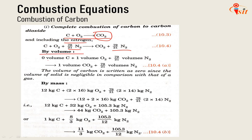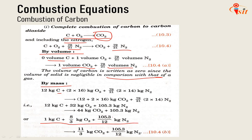By volume, the volume of carbon is considered negligible in comparison with that of gases. So: 0 volume C + 1 volume O2 + (79/21) volume N2 gives the volume of N2 on the product side. By mass, using molecular weights — carbon is 12 kg, oxygen 32 kg, nitrogen 2×14 kg — ultimately 1 kg of carbon reacts with (8/3) kg O2 plus (105.3/12) kg N2 to give (11/3) kg CO2 plus (105.3/12) kg N2. That is the result when complete combustion takes place.